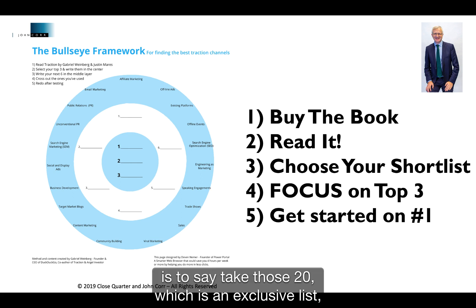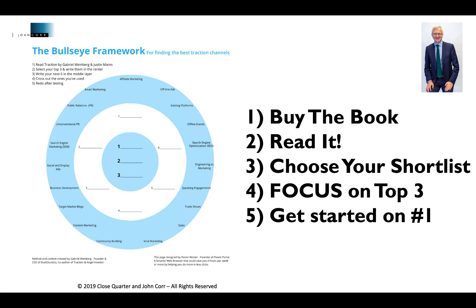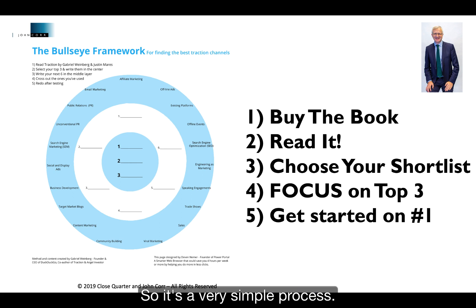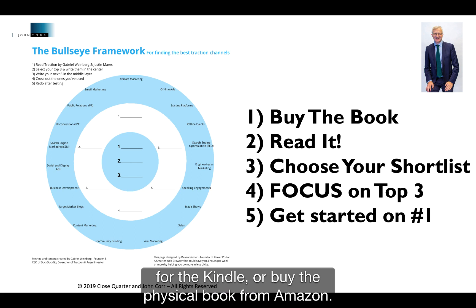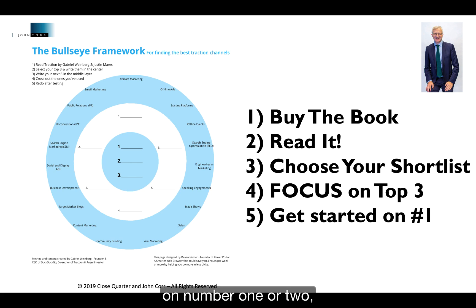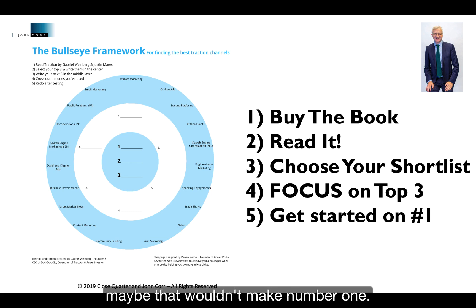Gabriel's smart approach is to take those 20 channels — which is an exhaustive list — and pick the six you're most comfortable or confident about, putting them in the next ring in. Then sit back again and think of your top three. It's a simple process — buy the book for about five to ten pounds on Kindle or as a physical book from Amazon. Read it, choose your shortlist of six go-to-market strategies, focus down, select the top three — which, if you're in a big firm, could include getting leads off colleagues — and immediately get started on number one.